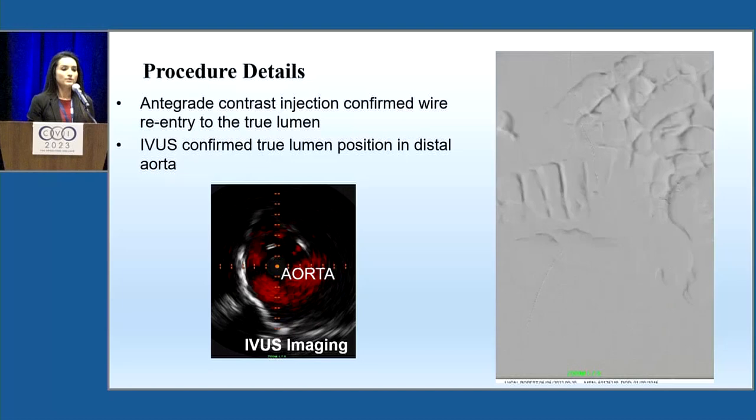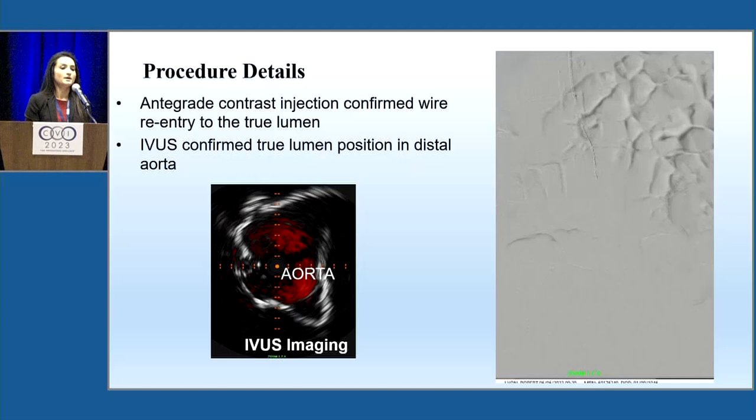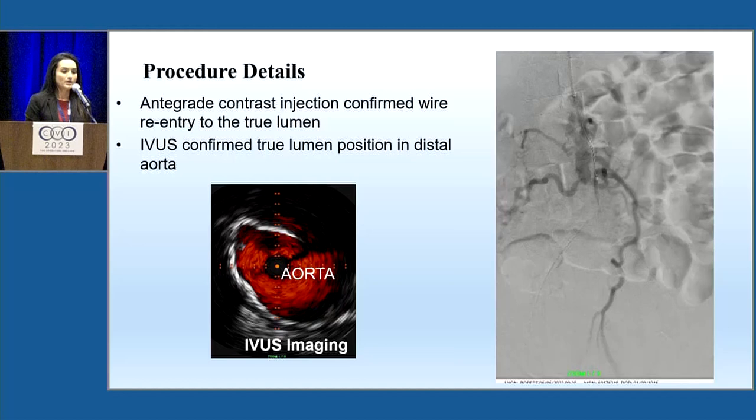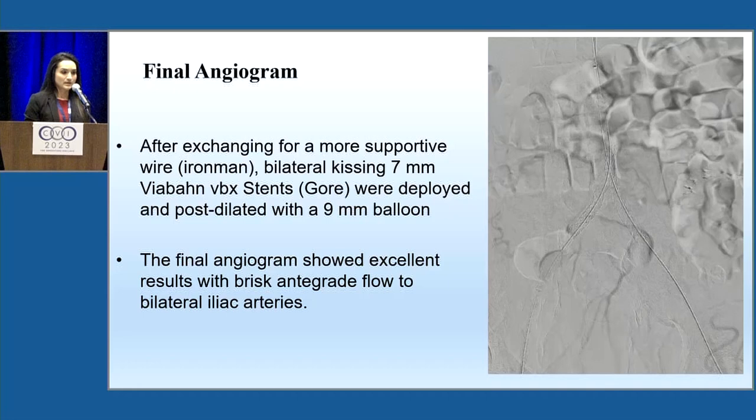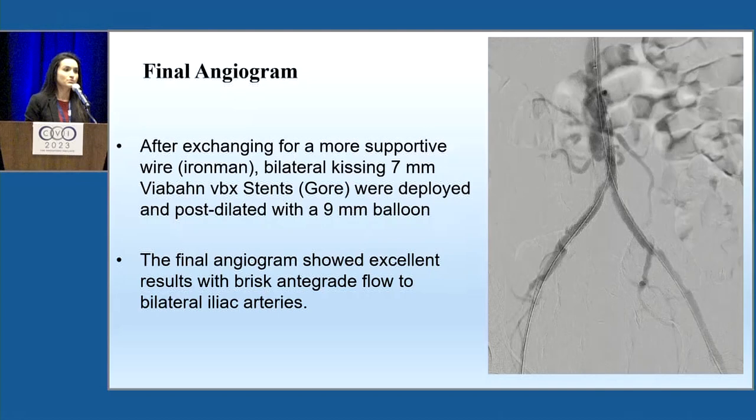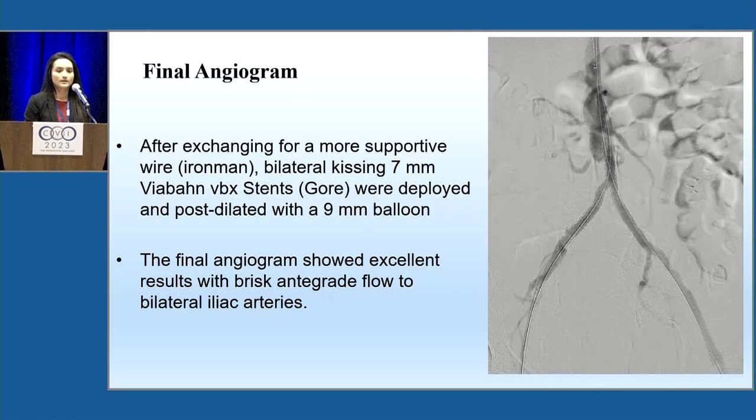Once we were able to access the true lumen, an integrated angiogram confirmed we were in the true lumen with flow across the aorta. We were able to deploy bilateral kissing stents expanded with a 9-millimeter balloon, and the angiogram showed excellent results — flow established through the descending aorta into bilateral iliacs.